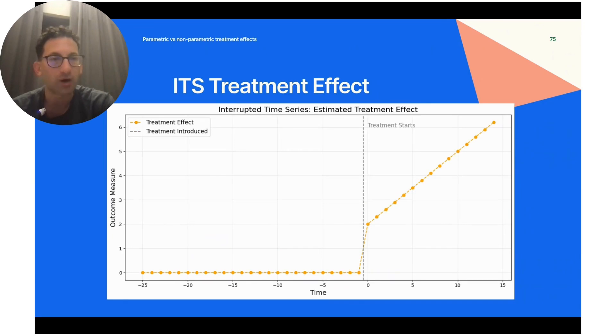If we plot out that treatment effect, it's zero leading up to the event, then it jumps—that's the level shift—and continues to grow over time due to the trend shift. In some cases, this might be absolutely ridiculous if you think too far out.